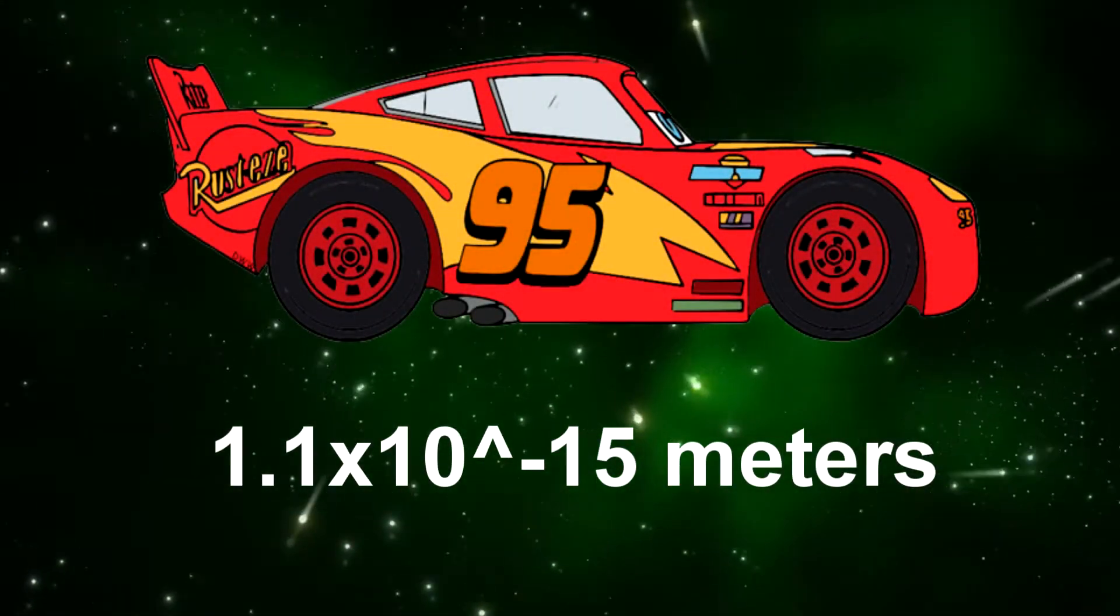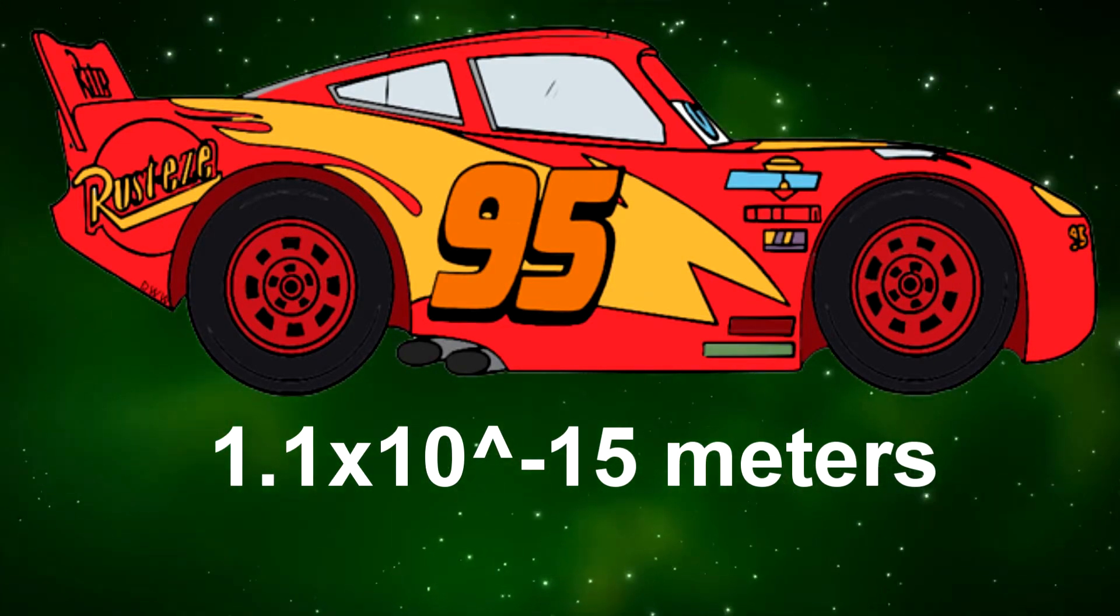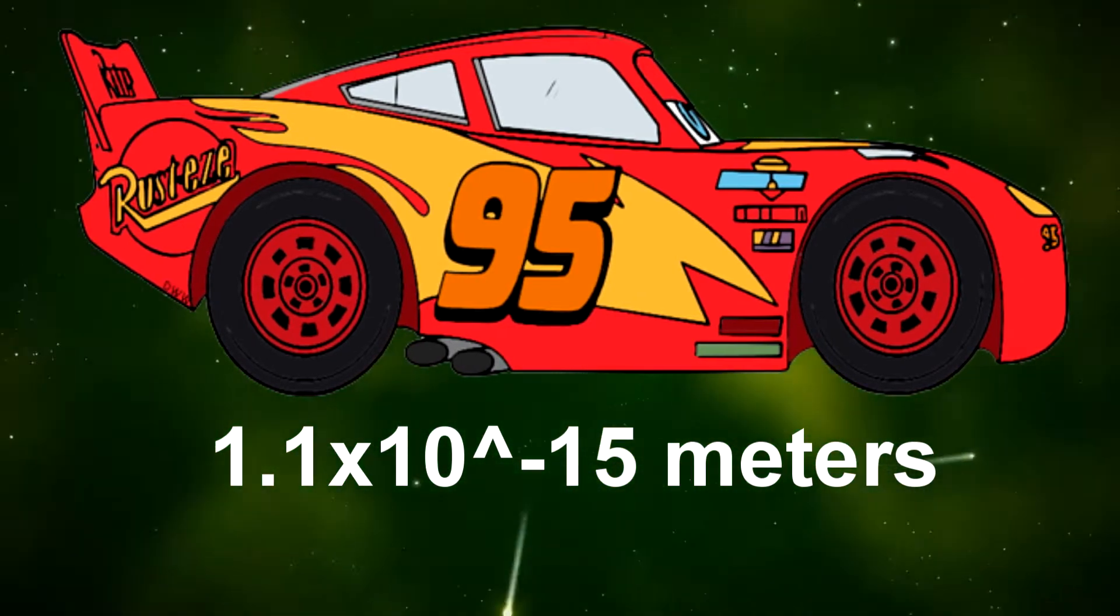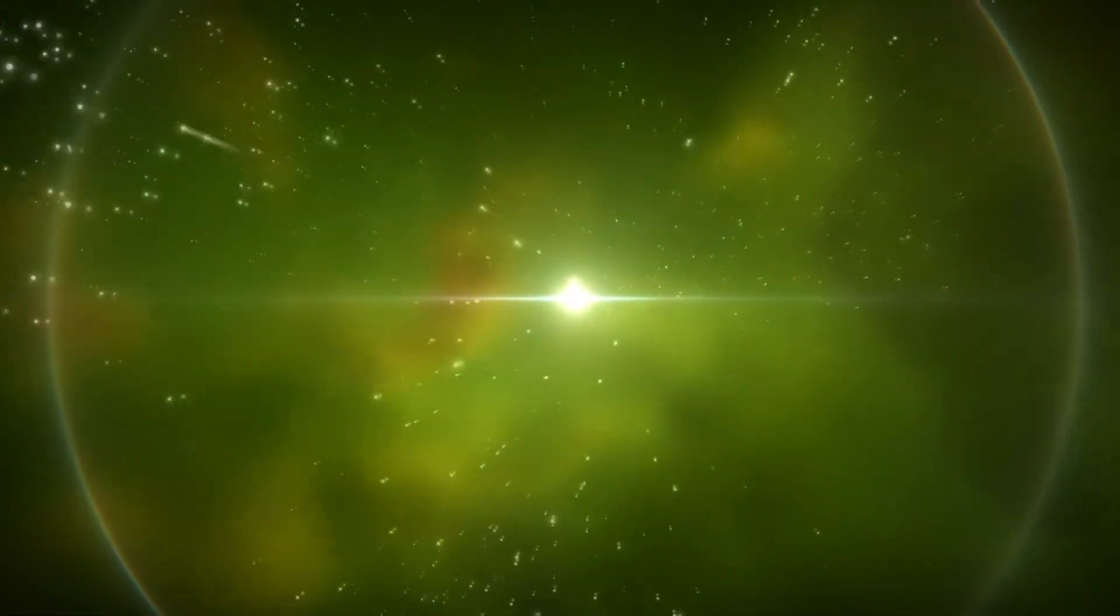For example, when walking to a parked car at a normal walking speed, you will see the car 1.1 times 10 to the minus 15 meters closer to you and the same distance thinner. Also, the time experienced by the car would be slower compared to yours. Each second would have an extra 1.1 times 10 to the minus 15 seconds added on.